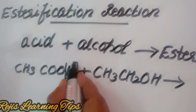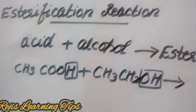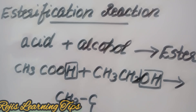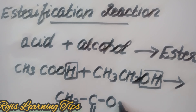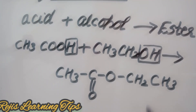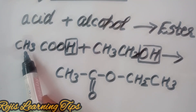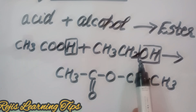In this reaction, the acid provides its part and the alcohol's OH is removed. The resulting ester has the structure CH3-C(=O)-O-CH2-CH3. That structure is known as an ester.